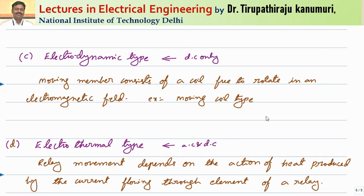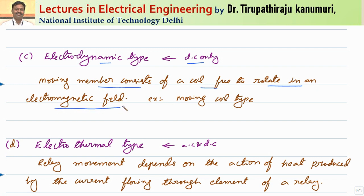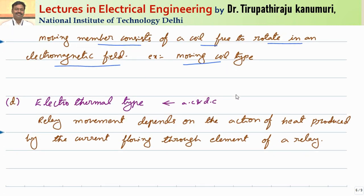Coming to the next type — electro-dynamic type. As the name suggests, it works based on the principle of the dynamo and operates only for DC. A moving member consists of a coil which is free to rotate inside an electromagnetic field. The example of this is the moving coil type, which we will see in detail in coming classes.